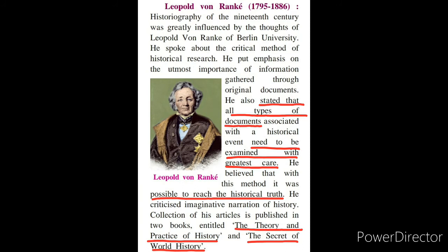According to Ranke, if we want the answers of history we should take them only from historical books, and if we critically examine the historical events, it is quite possible to reach the historical truth. Leopold von Ranke also criticized the imaginative narration of history — meaning those who spread rumors or false information without proper evidence. He used to condemn them, saying don't give imaginative or narrative answers about history. His two published books are titled 'The Theory and Practice of History' and 'The Secret of World History.'